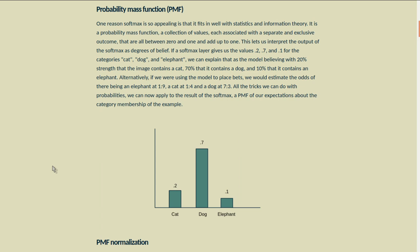This lets us interpret the output of the Softmax as degrees of belief. So if a Softmax layer gives us the values of 0.2, 0.7, and 0.1 for the categories cat, dog, and elephant, we can explain that as the model believing with 20% strength that the image contains a cat, 70% that it contains a dog, and 10% that it contains an elephant.